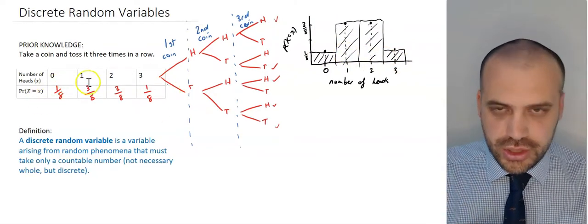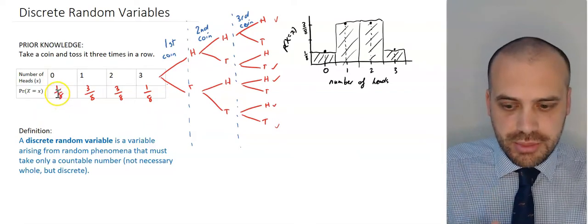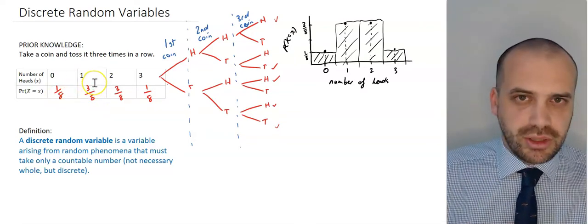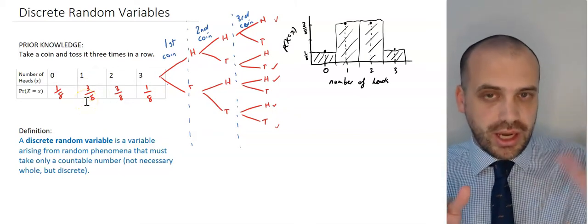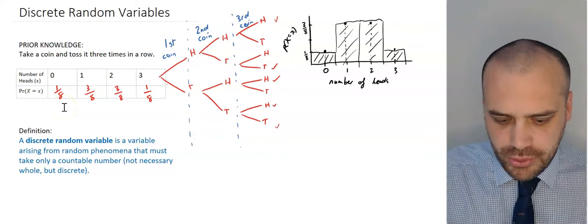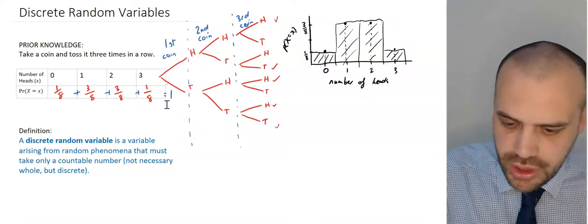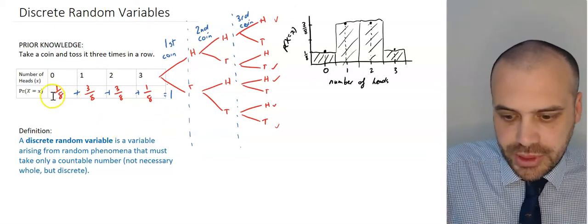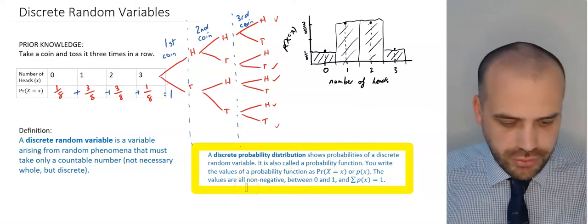There are two key ideas to take away from this table. First, these are probabilities, so they need to be between zero and one — you can't have a negative probability, and you can't have a probability like 1.1 or 1.3. Second, if you add up all of those values, the answer will be one. That's always the case for a discrete random variable distribution, because something had to happen — so the probability that something happens equals one.